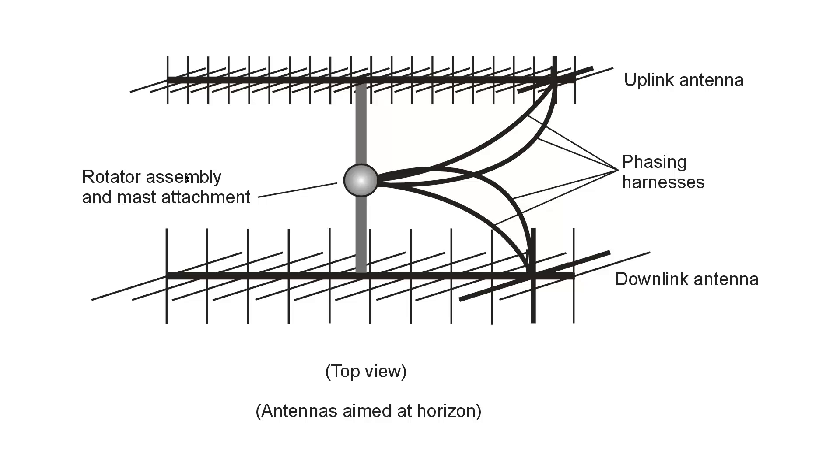This is the rotator assembly and attachment to the mast, which you can't see here because it's underneath the rotor and it goes straight down away from you. The rotator assembly here obscures the mast, making the drawing a little simpler. This rotator assembly can turn either in the horizontal plane or in the vertical plane.